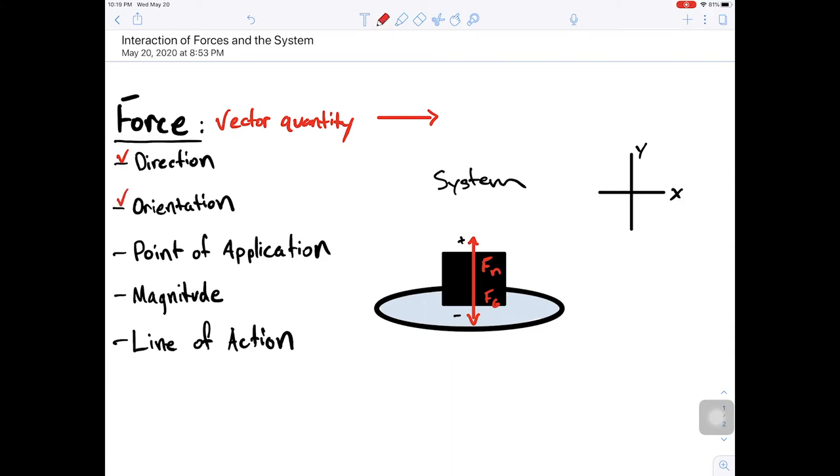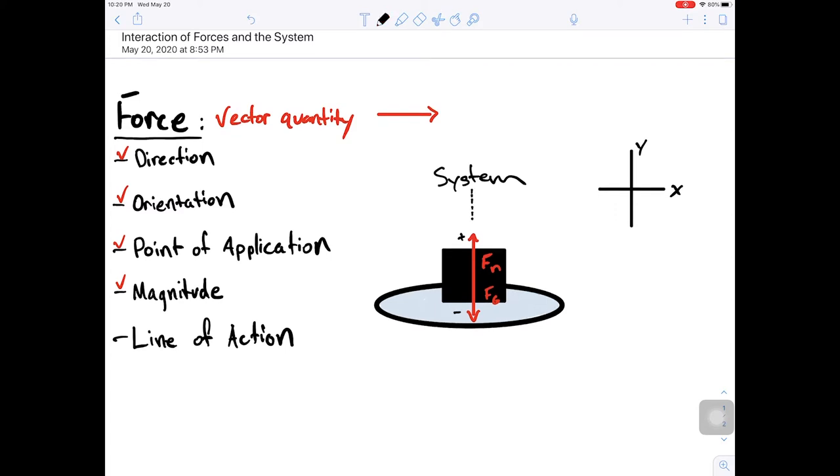They have a point of application which is the center of mass of the box. They have a magnitude which we haven't given the magnitude in newtons but we do know that they are equal to each other and they have a line of action which is an imaginary line running infinitely through the tip and the tail of each vector. So in this case the line of action is running in this direction.